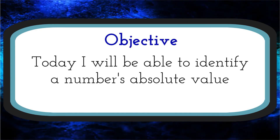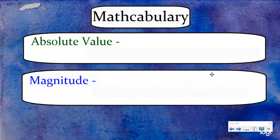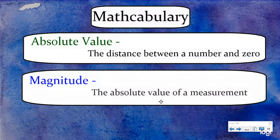Let's start with our mathcabulary to help us define these terms. Absolute value is the distance between a number and zero. Now, magnitude is something very similar to absolute value. Many people use it interchangeably, but when we're talking about magnitude, we're going to be talking about the absolute value of a measurement.